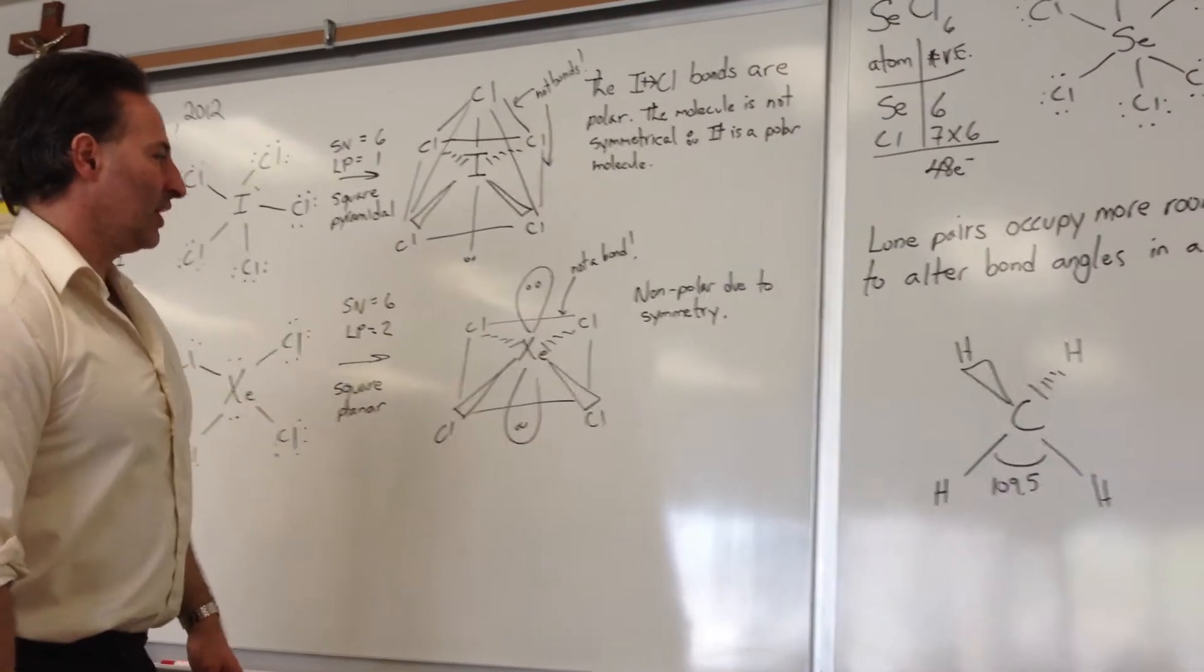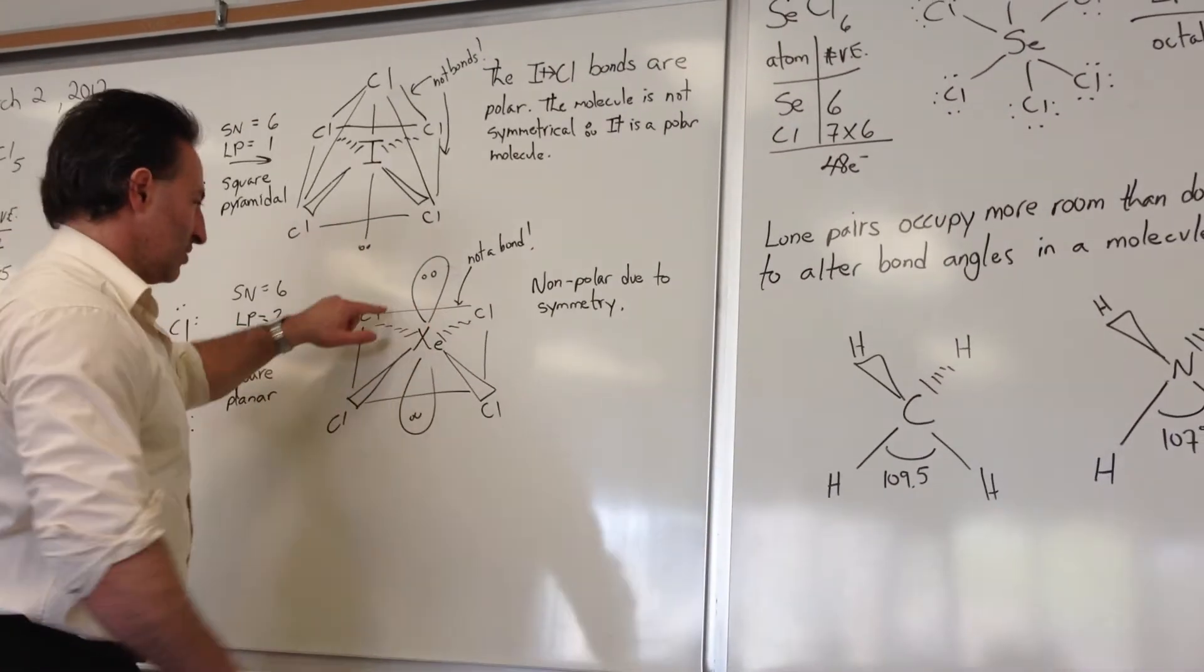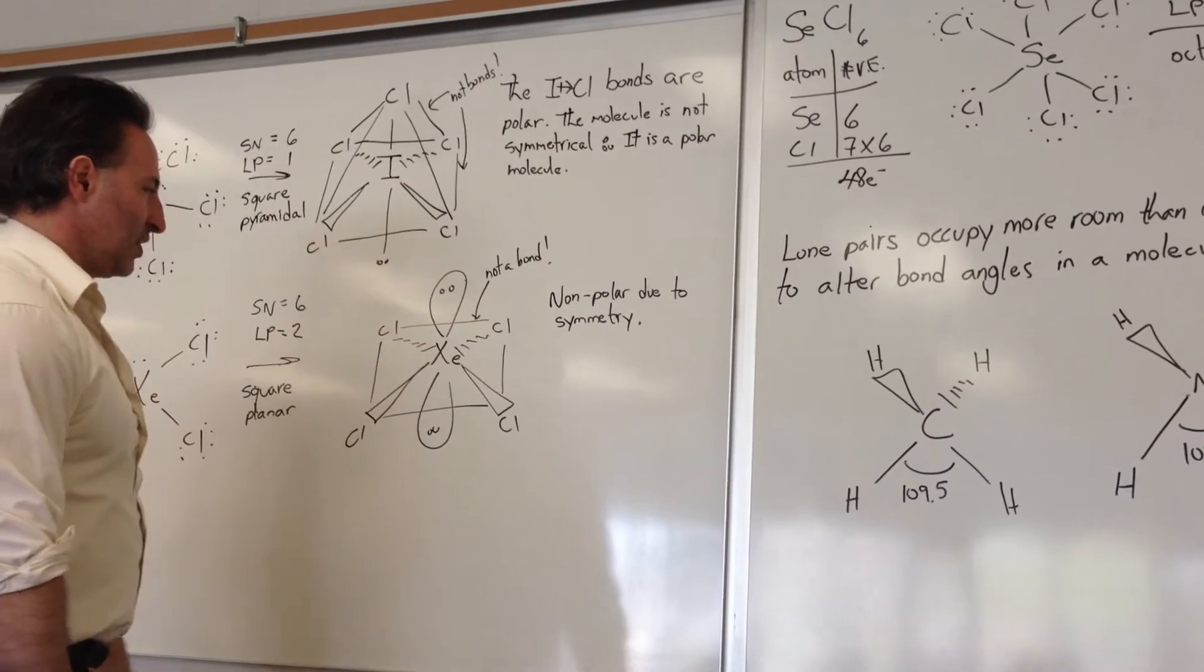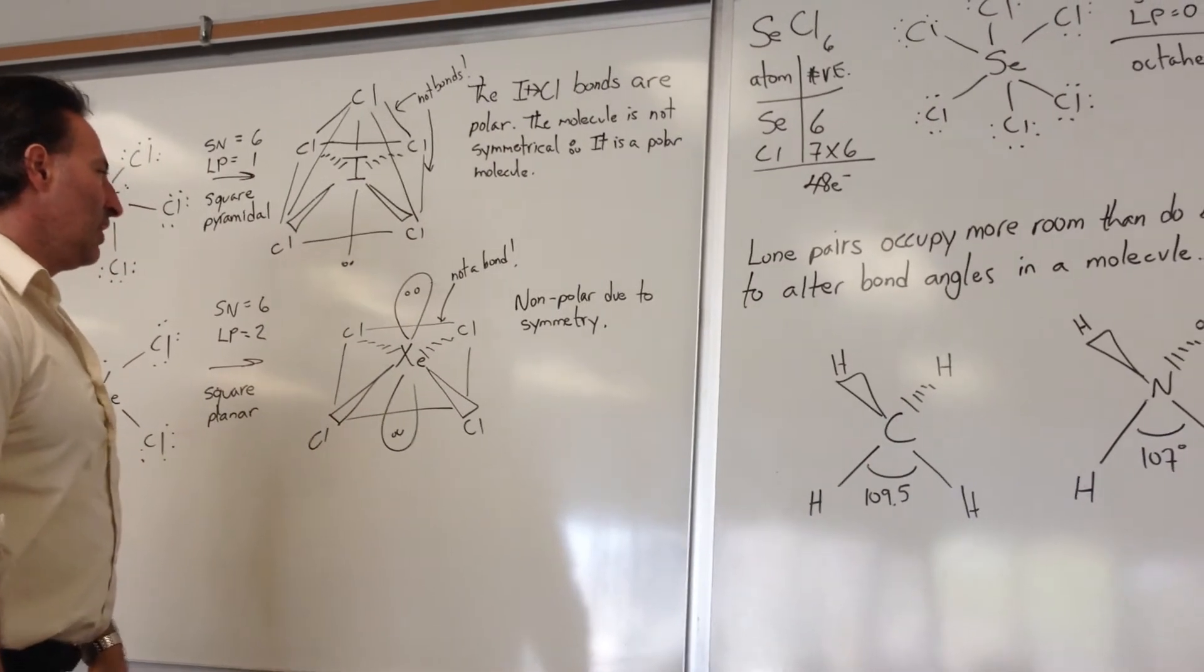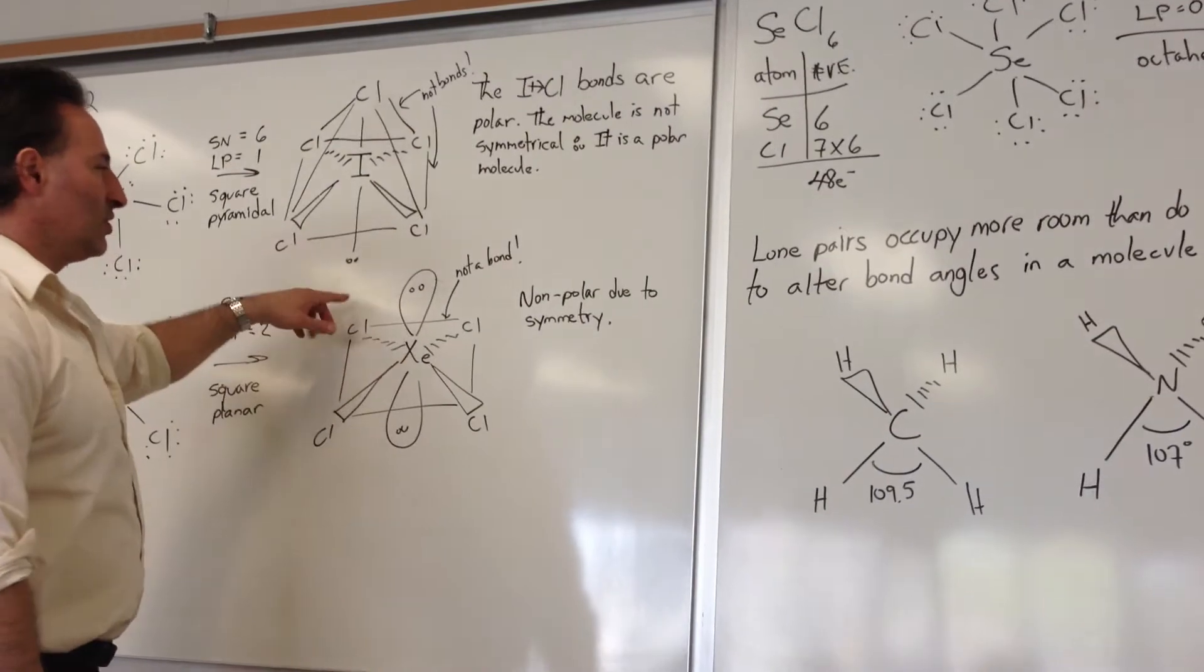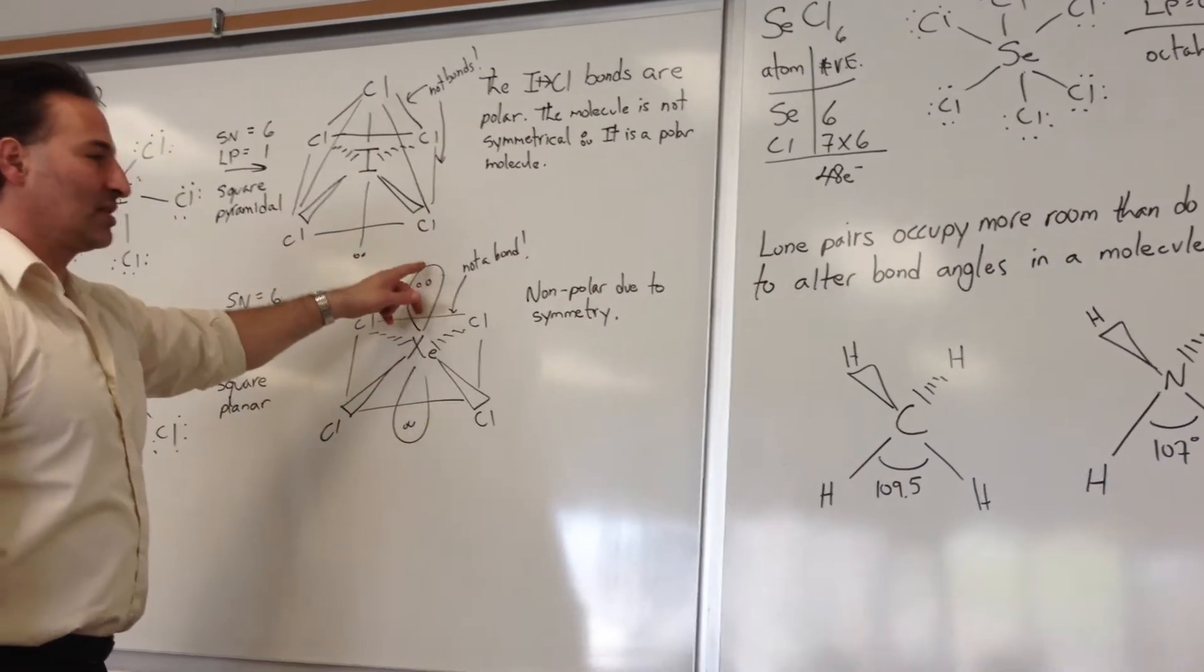But you always recall that the orientation is such that there's a 90-degree angle between each of the things that are attached to the central atom. And in an octahedral geometry, all the bond angles are equivalent. It's always 90 degrees.